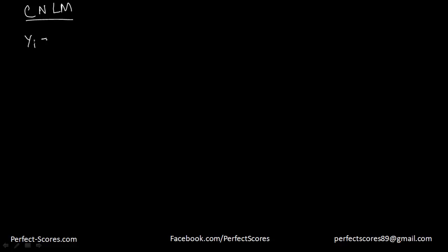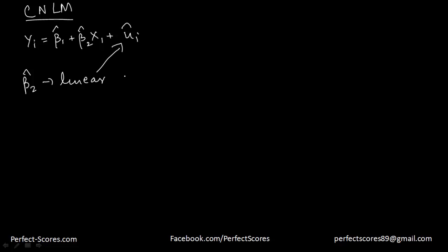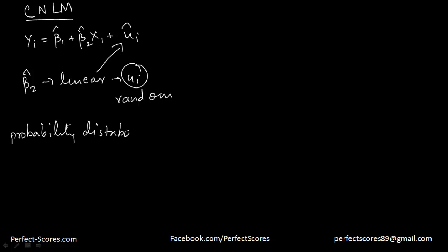We have talked about our ordinary least squares method wherein we found out the value of yi, and we had some population parameters which are beta1 hat and beta2 hat, and this was our error term. Now since the value of beta2 hat is a linear function of the random variable — which is the value of ui hat, the random variable of the error term ui — that means the probability distribution of beta2 hat would actually be related to the probability distribution of ui.